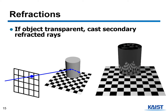Let's talk about refraction. If an object is transparent, we can see through it to other objects. For example, this cylinder is kind of glass. If the primary ray intersects with the transparent object, we generate another secondary refractive ray that passes through the transparent object. This secondary refraction ray then reflects off the floor, so we can see through the checkerboard through this transparent object.